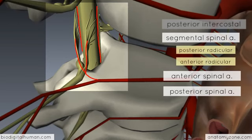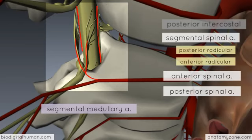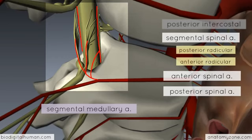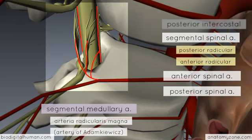At some vertebral levels there's another branch called the segmental medullary artery. This comes off the segmental spinal artery and directly joins the descending vertical arteries — the anterior and posterior spinal arteries. This doesn't happen at every spinal level, but it acts to reinforce the blood supply provided by these vertical descending arteries. The largest segmental medullary artery is known as the arteria radicularis magna — meaning the great radicular artery — which arises in the lower thoracic and upper lumbar regions and reinforces blood supply to the distal parts of the cord.